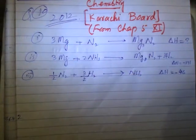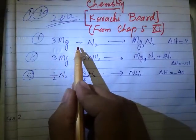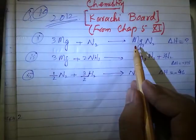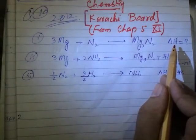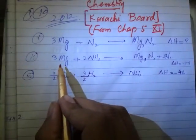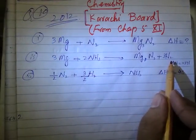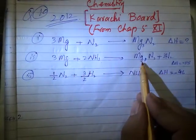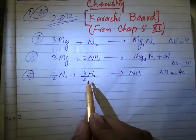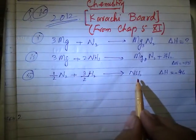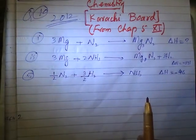The question number is 10. It includes three equations. Equation 1: three moles of Mg reacts with one mole of N₂ to form one mole of Mg₃N₂ — ΔH is to be calculated. Equation 2: 3Mg plus 2NH₃ gives Mg₃N₂ and 3H₂. Equation 3: half mole of N₂ reacts with 1.5 moles of H₂ to form NH₃.